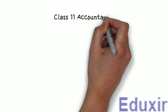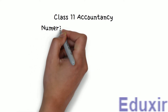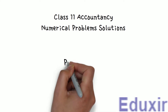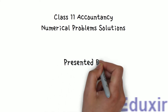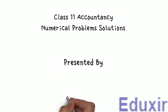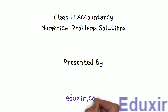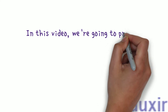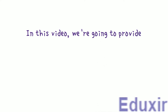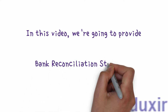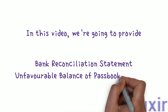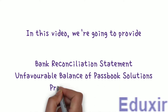Class 11 accountancy numerical problem solutions, presented by eduxit.com. In this video we are going to provide the bank reconciliation statement unfavorable balance of passbook solutions — problem 15 solution.